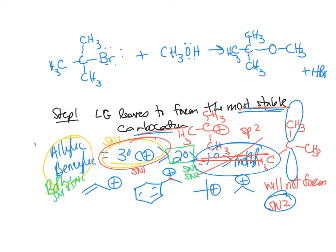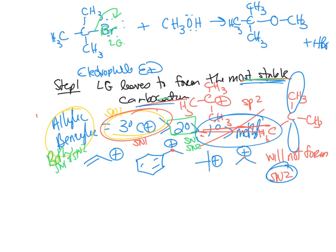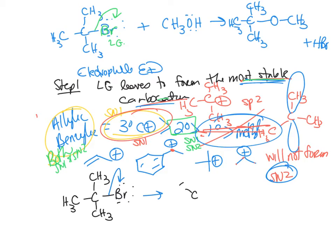So that covers the electrophile. In step one, the leaving group of the alkyl halide leaves to form the most stable carbocation. You show this with one electron-flow arrow from the leaving group. In the mechanism, you write: leaving group leaves, then that forms the more stable carbocation.